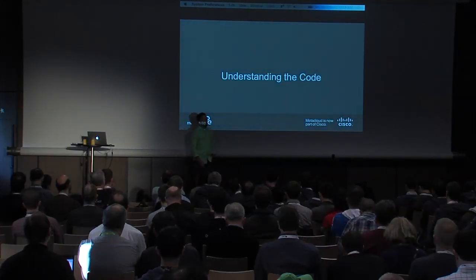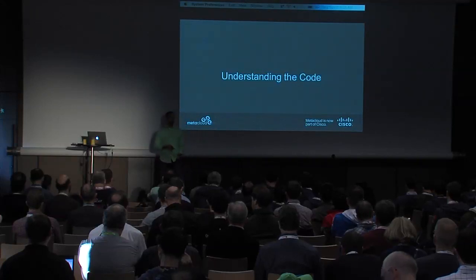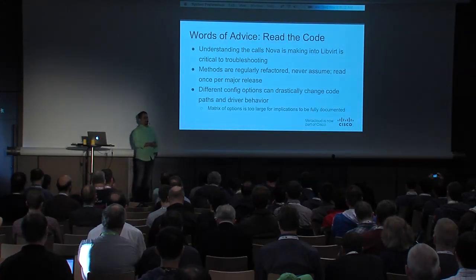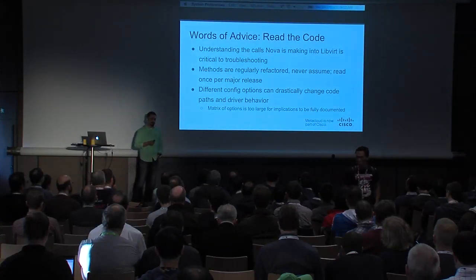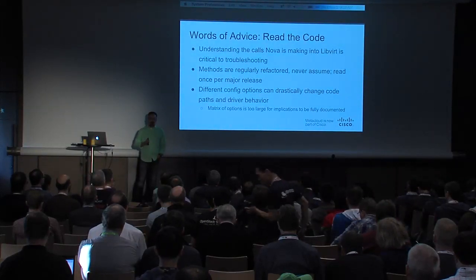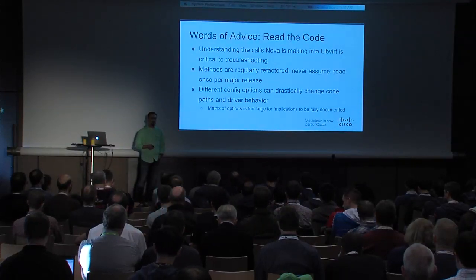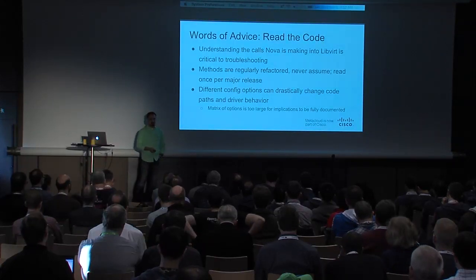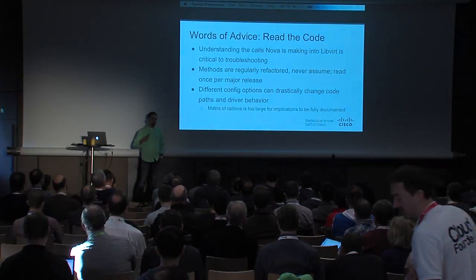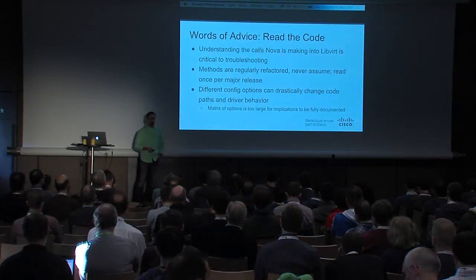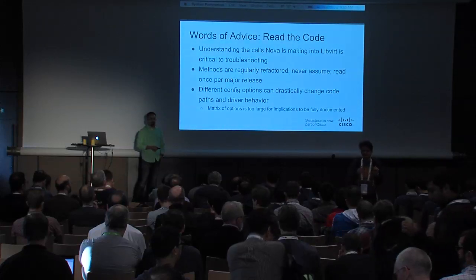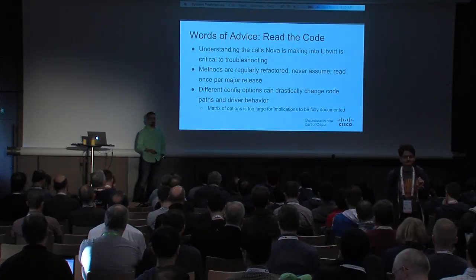A lot of the assumptions today are based on the Icehouse code base, and a lot of that will continue to hold true for Juno. But it's important to review this regularly to ensure your assumptions continue to hold true. Understanding the code — the documentation team stays on top of everything, but there's such a matrix of configuration options that it's basically impossible to test for all variants. Gate continues to expand, but that's generally encompassing new hypervisors and new drivers rather than additional configuration options.